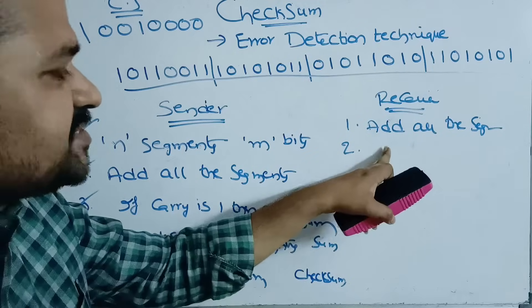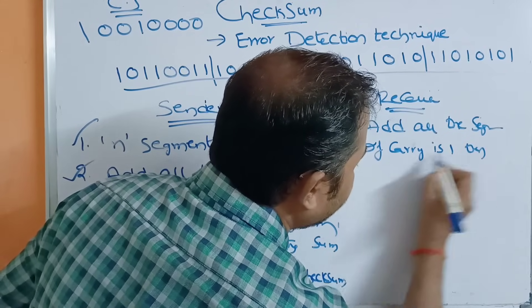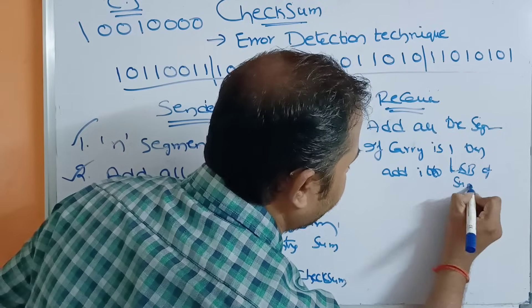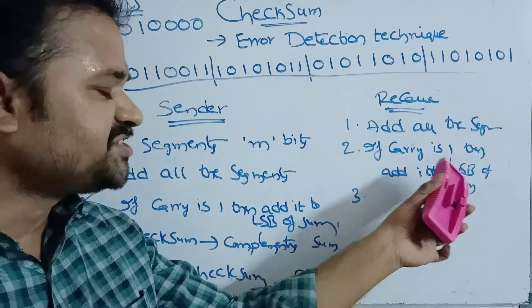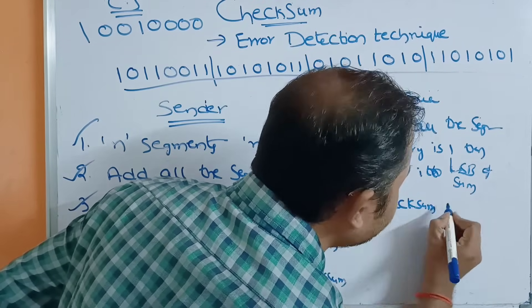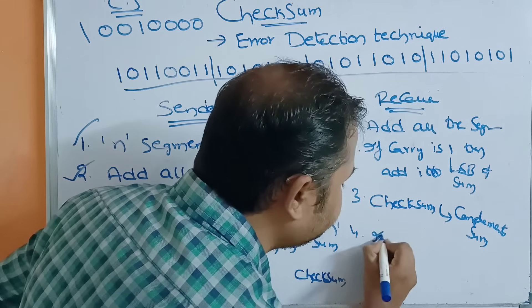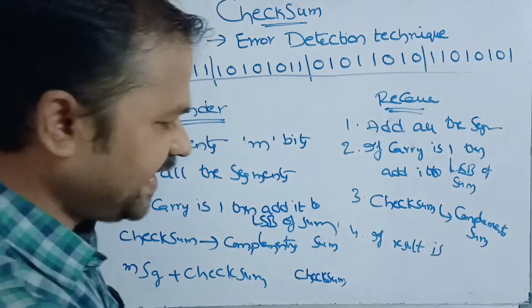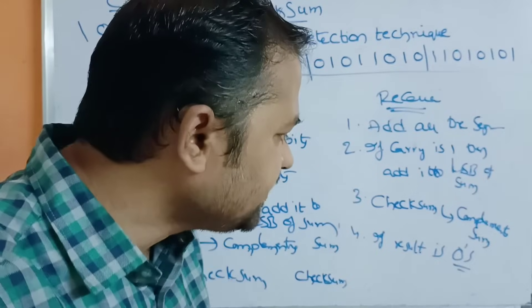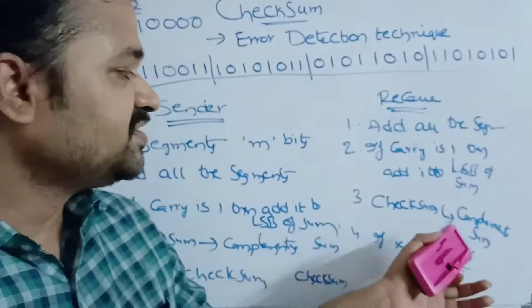The receiver performs an addition operation on all 5 segments. If carry is 1, add it to the LSB of the sum. After performing the addition, we complement the sum. If the result is all 0s — that is, 8 zeros — then the message is accepted by the receiver. If the result contains some 1s, it indicates there is an error.